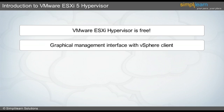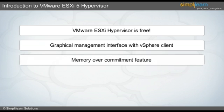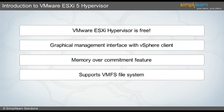VMware ESXi hypervisor can over-commit memory resources and can perform page sharing and compression to optimize performance of memory resources. It also supports the VMFS file system, a featureless file system which is perfect for handling a virtual machine in local or shared storage.